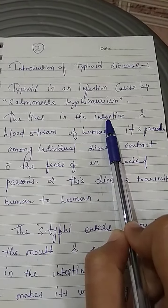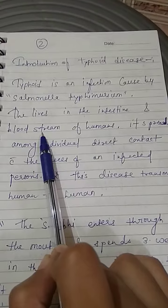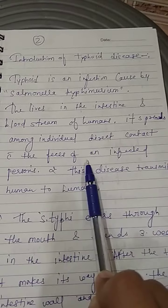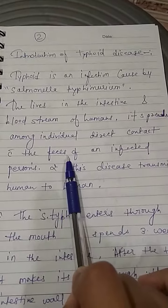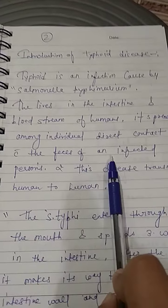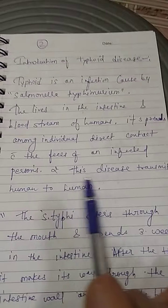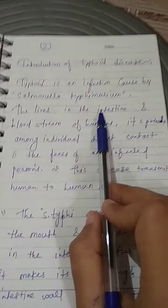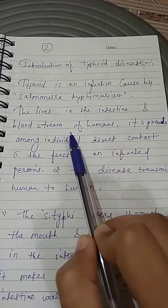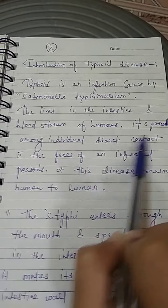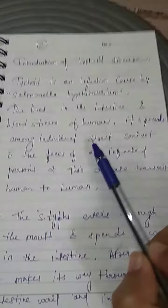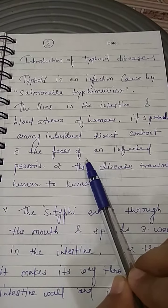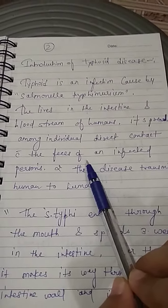Salmonella typhi lives in the intestine and spreads through the bloodstream to organs. It can be transmitted from human to human through contact with feces. The bacteria affect the small intestine and bloodstream, reaching the liver, spleen, and lungs, disturbing lymphoid tissue and damaging the kidney.